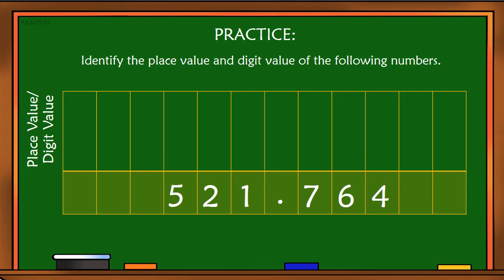Let's do the place values. One is ones. Two is tenths. Five is hundredths. For decimal numbers, we have seven tenths, six hundredths, and four thousandths.